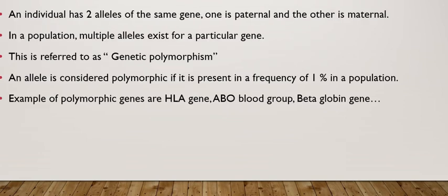As we all know, an individual usually has two alleles of the same gene, one coming from the father, known as the paternal origin, and the other coming from the mother, known as the maternal origin. Usually in a population, every gene might have multiple alleles — meaning it might consist of several alleles. For example, the ABO blood group system is made up of three alleles: allele A, allele B, and allele O. But every one of us will have a combination of two of these alleles to form the gene that represents our blood group.